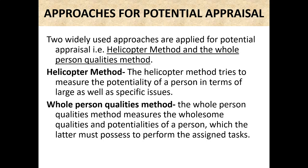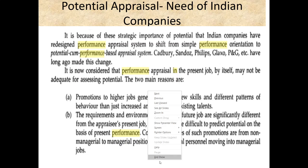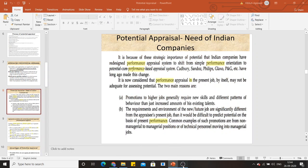There are two approaches of potential appraisal: the helicopter method and the whole person qualities method. The helicopter method tries to measure the potentiality of a person in terms of large as well as specific issues, while the whole person quality method includes the wholesome qualities and potentialities of a person. There are many companies using the potential appraisal system, and we will discuss all these systems in our next class. Thank you.